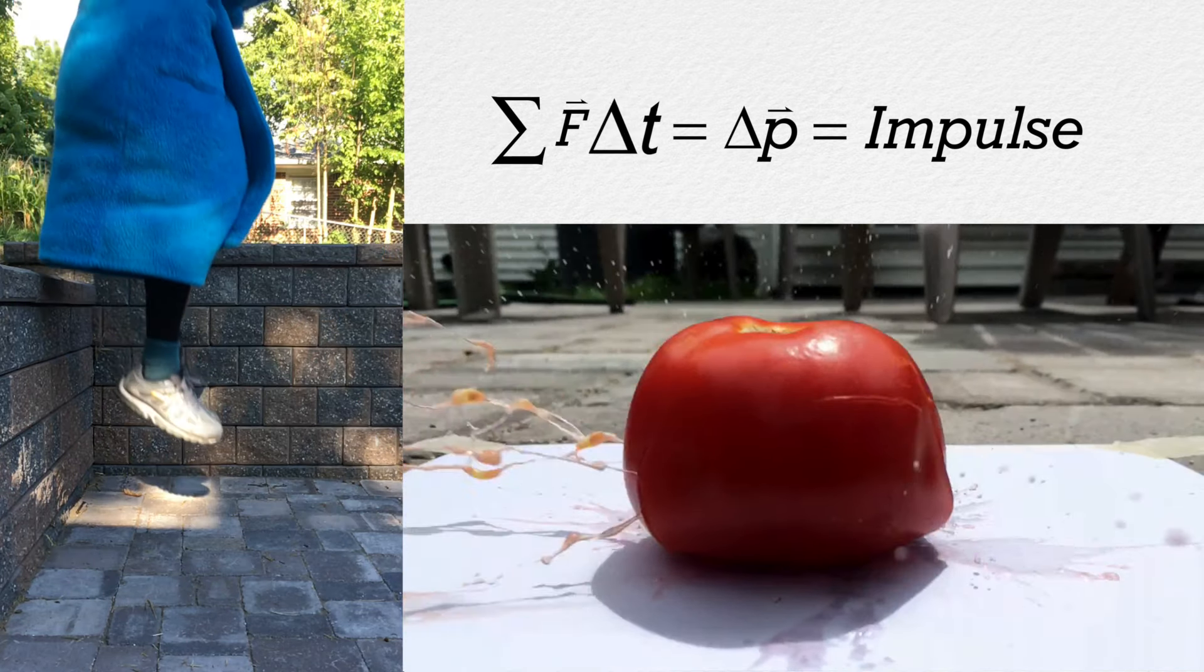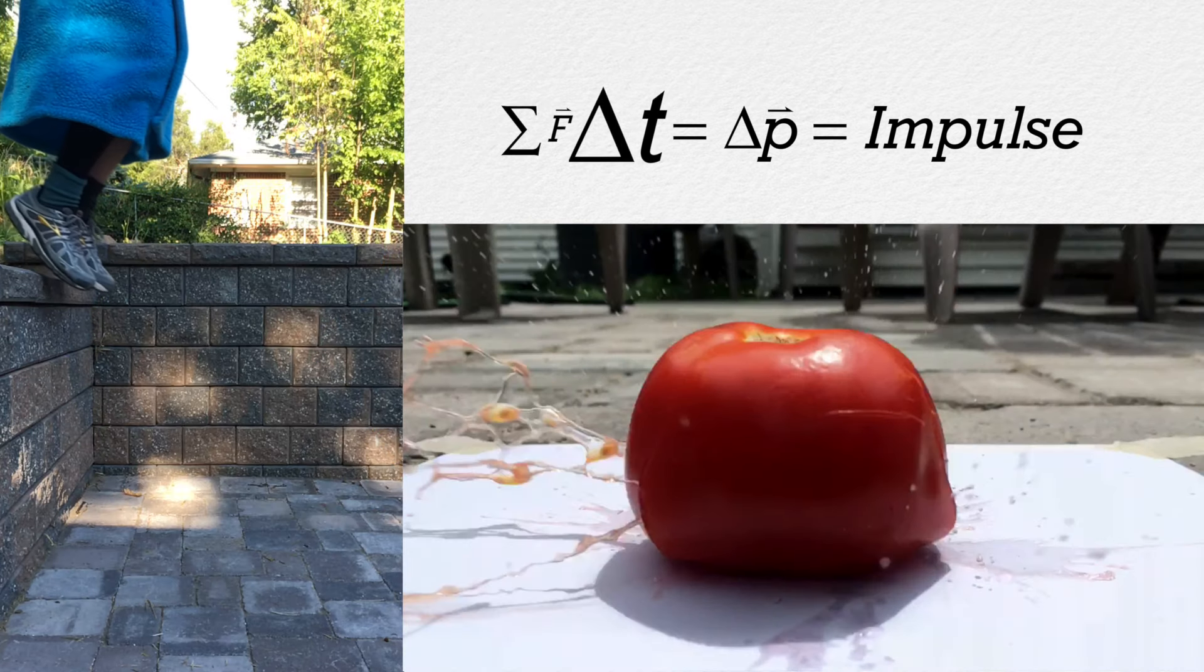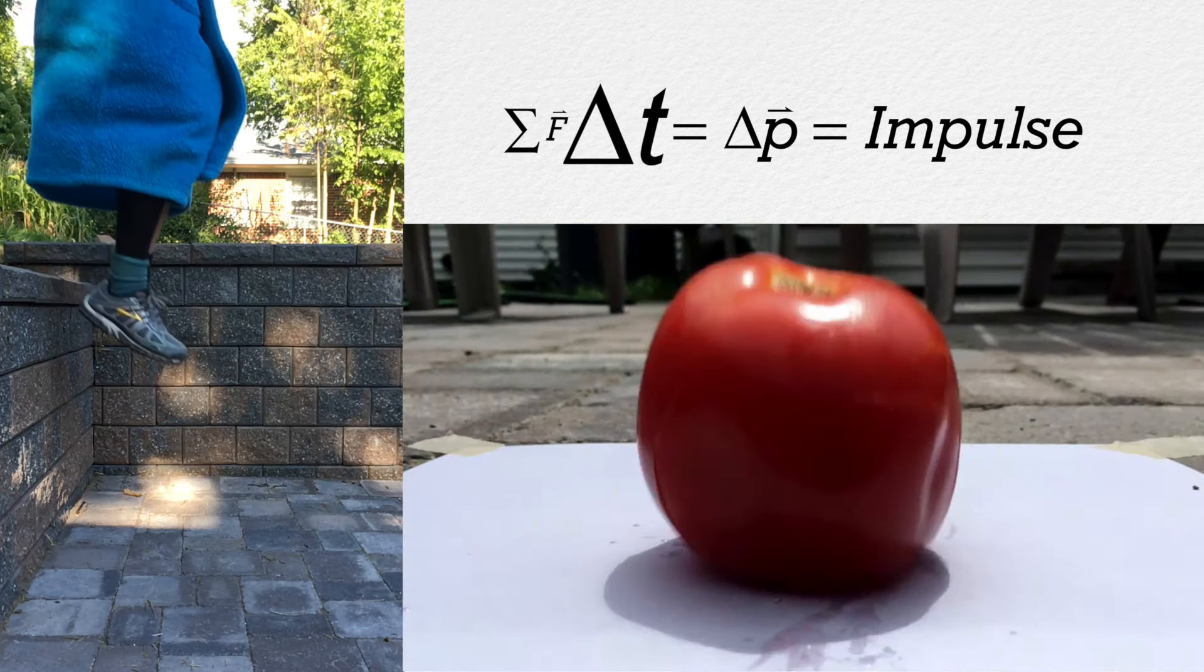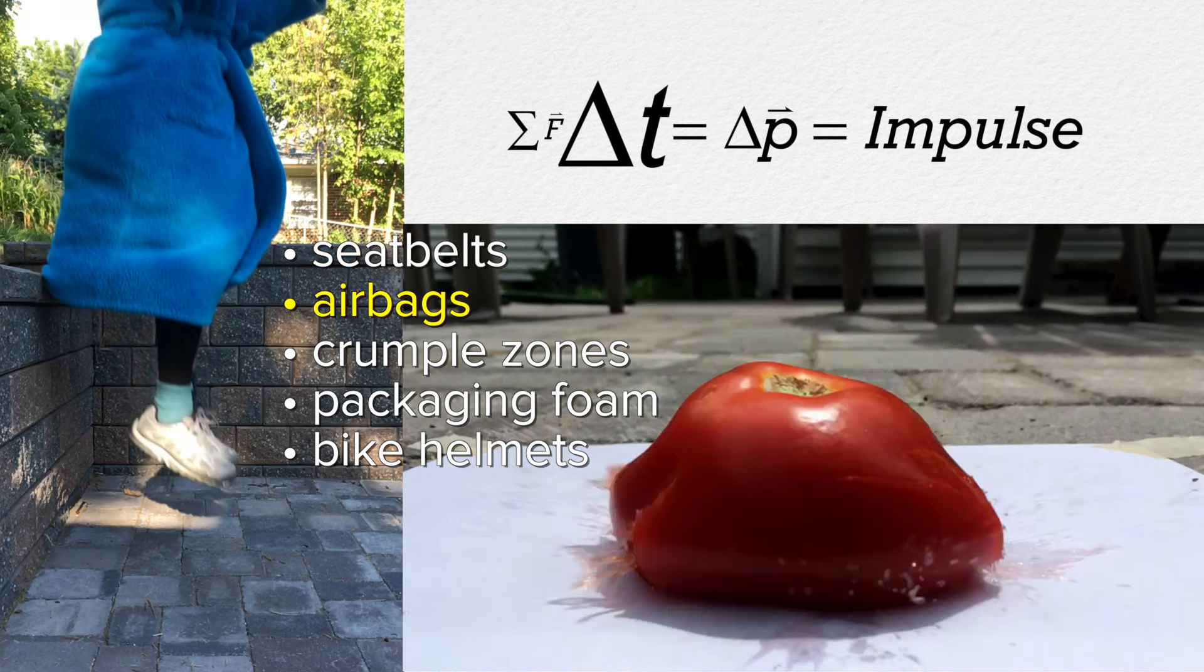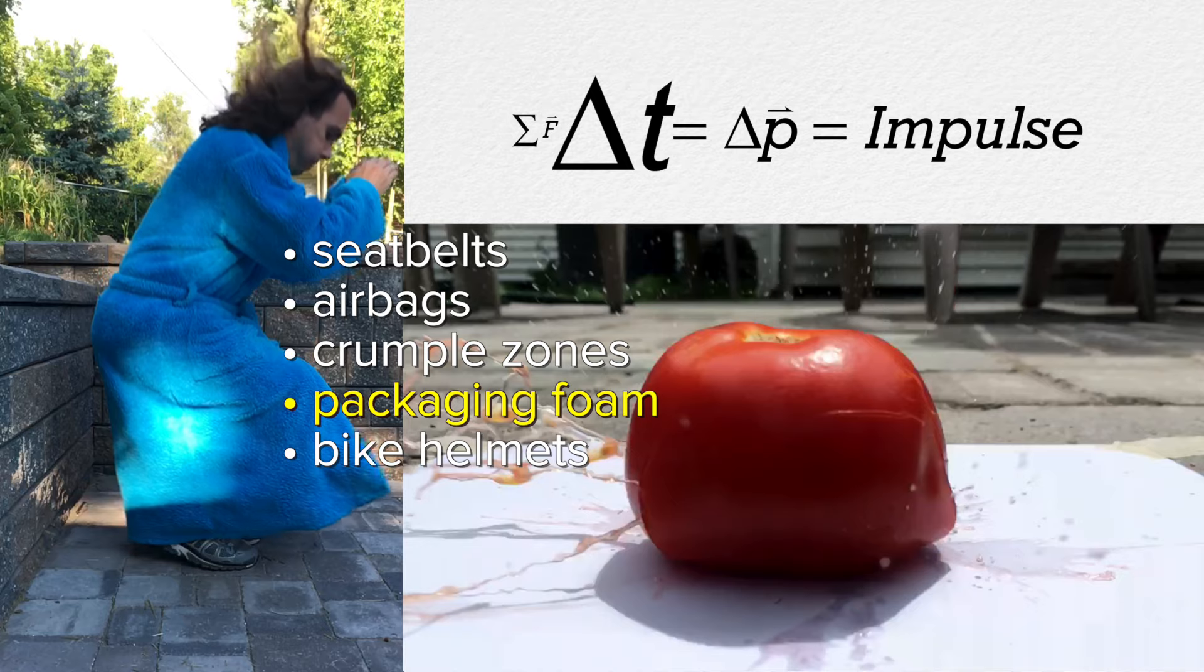Now, there are many examples where we increase the change in time during the collision to decrease the force of impact. Seat belts, airbags, automobile crumple zones, packaging foam, bike helmets.